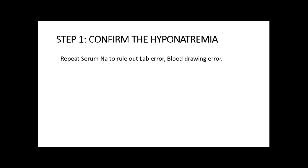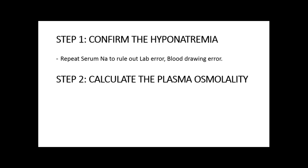Let's talk about management of hyponatremia. Step one is to confirm hyponatremia — repeat the serum sodium level to rule out lab error or blood drawing error. Never draw blood from an IV line or from a vein where fluid is flowing. After confirming hyponatremia, step two is to calculate plasma osmolality using the equation: 2 times serum sodium, plus blood urea nitrogen divided by 2.8, plus glucose divided by 18. This requires knowing BUN and glucose levels.